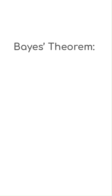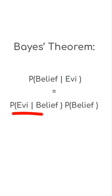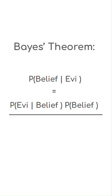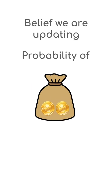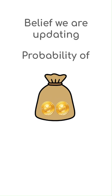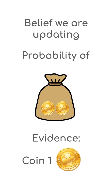Enter Bayes' theorem, which formalizes this line of reasoning using a simple mathematical equation. The probability of a belief being true given some evidence is equal to the probability of finding that evidence given the belief is true, times the probability of the belief being true before the evidence came along, divided by the probability of finding the evidence. In our case, we are updating our belief about the bag being the one with two gold coins, as only then can the second coin also be gold. The evidence we have is the first gold coin.